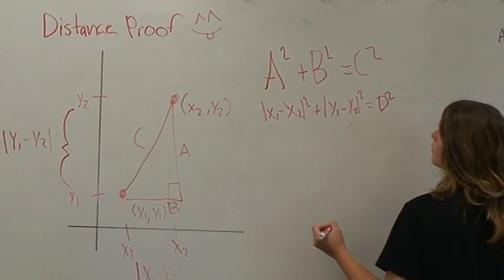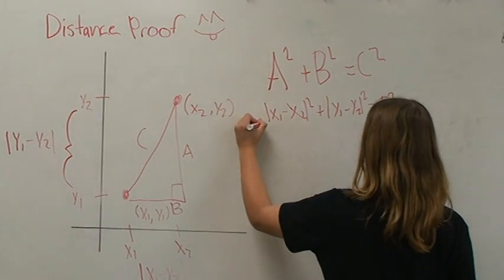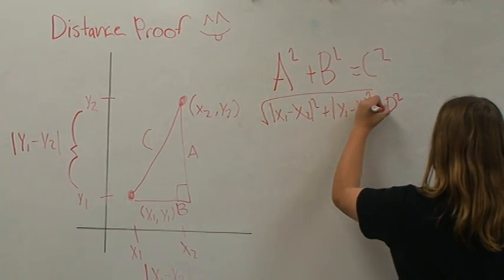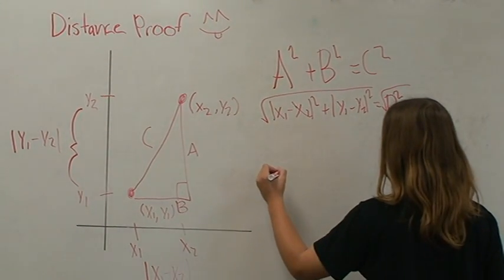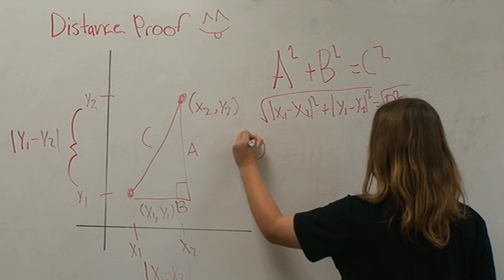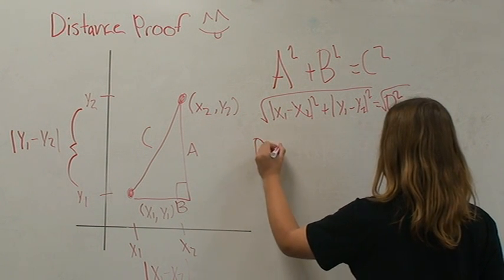We then solve for D by taking the square root of both sides and simplify it. Let's put D on the left-hand side: D equals the square root.